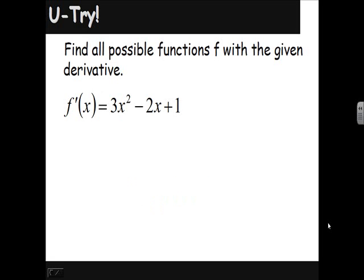Try this one. f prime of x equals 3x squared minus 2x plus 1. Find any function that would have this as a derivative, or find all of them. How about x cubed minus x squared plus x plus c? The derivative here would be 3x squared. That's what we see. The derivative here would be negative 2x. That's what we see. The derivative here would be 1. And we could have any constant.